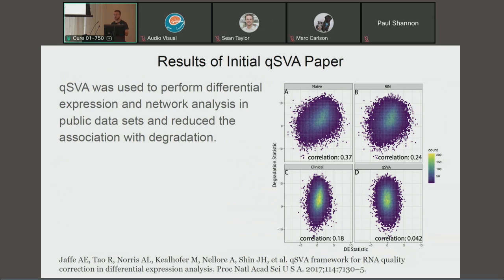Also, controlling for common clinical variables, such as age, sex, race, still leaves a 0.18 correlation. Using our qSVA method reduces it down to 0.042. So adding those principal components from those transcripts to the model seemingly removes that effect.